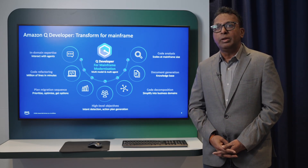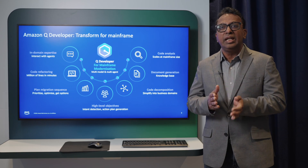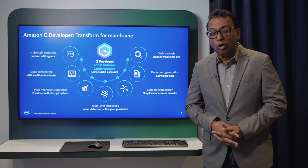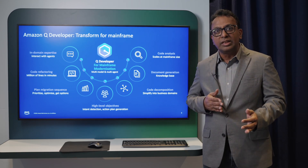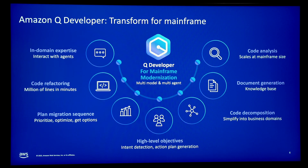With Q Developer, you can point it at your existing code and it can do a complete code analysis. It can identify all the existing code, how it was written, and generate documentation at scale. It can also identify code dependencies and what acronyms you have used. The key in mainframe modernization is document generation, because over the years you may have lost the documentation — that is going to be very key in modernization.